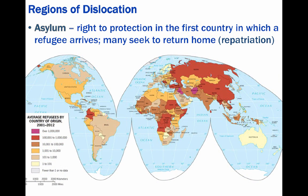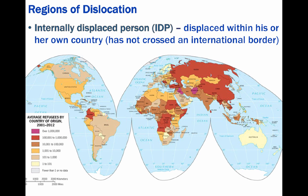The last section we're going to look at is dislocation, or the geography of refugees. International refugees have crossed one or more international borders to seek asylum, or the right to protection in the first country in which the refugee arrives. There are many who are not recorded as refugees because they are internal refugees, called internally displaced persons, or IDPs — they have abandoned their homes but remain in their own countries.